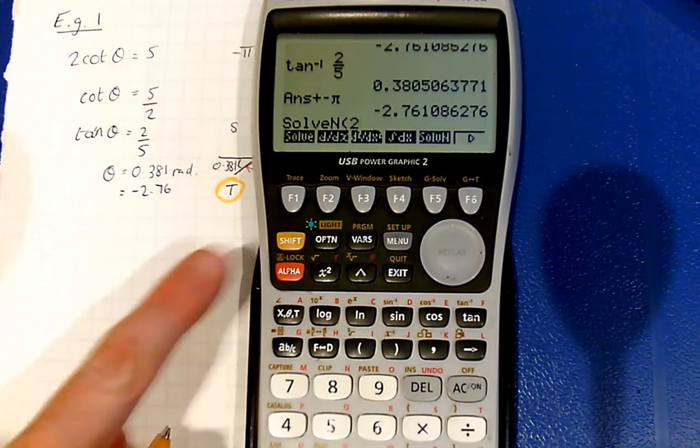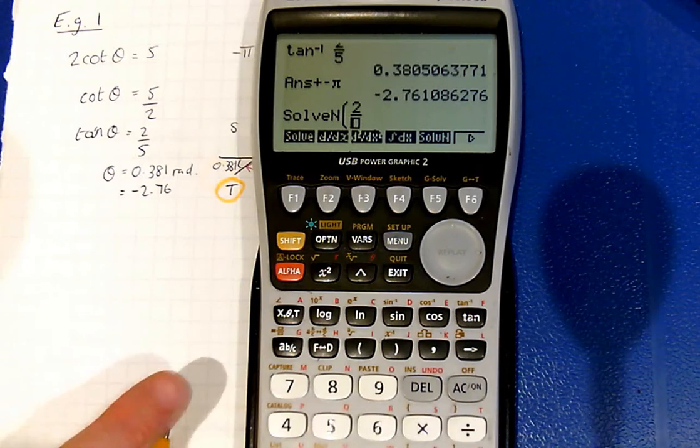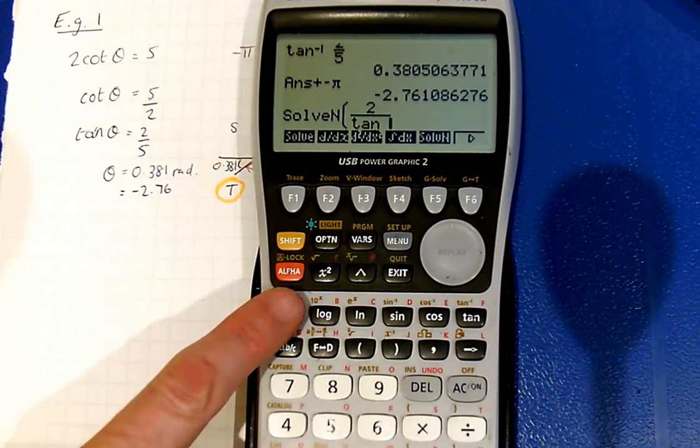So the equation is 2, and then cot is 1 over tan. So I'm doing 2 over tan x.